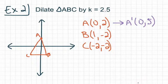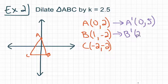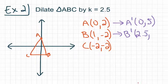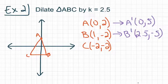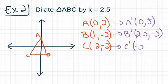For B prime, I take 1 and multiply by 2.5, which gives 2.5. Then negative 2 times 2.5 gives negative 5. So B prime is at 2.5, negative 5. And finally, for C prime, we multiply negative 2 times 2.5 to get negative 5, and negative 2 times 2.5 is also negative 5. So C prime is at negative 5, negative 5.